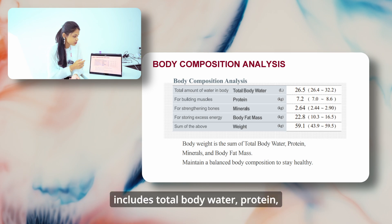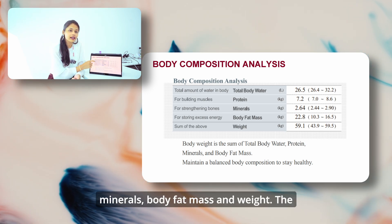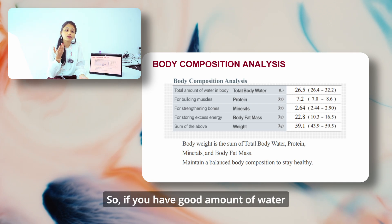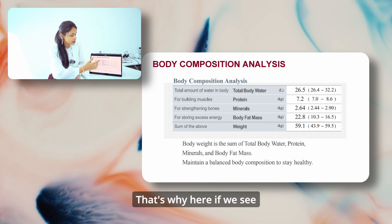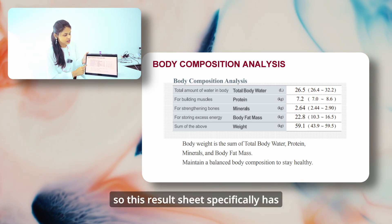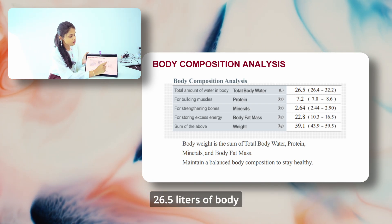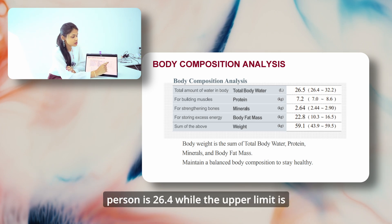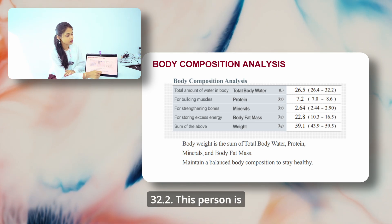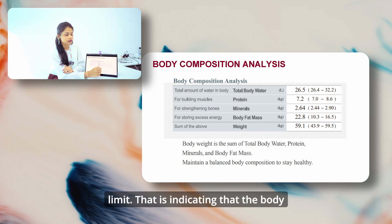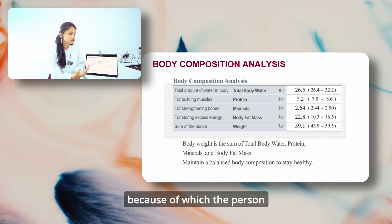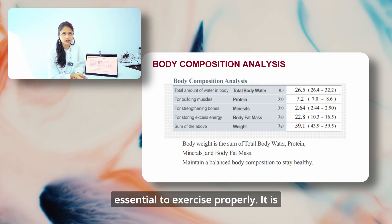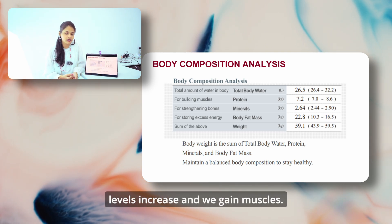The first parameter, body composition analysis, includes total body water, protein, minerals, body fat mass, and weight. Total body water has a direct correlation with how much muscle you can have in your body, as muscles are mainly made up of water. In this example, the person has 26.5 liters of body water. The lower limit is 26.4 while the upper limit is 32.2. This person is coming very close to the lower limit, indicating body water is a little less, which may also mean less muscle mass. To improve total body water, it is essential to exercise properly and build up muscles.